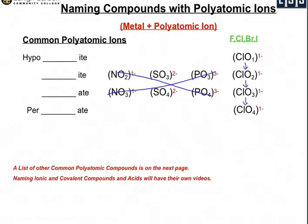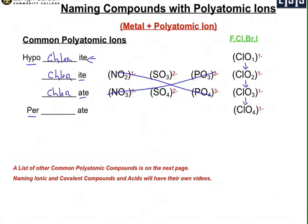For naming these halogen-oxygen ions, you still have the ITE and ATE forms, but because there are four, you also add a hypo prefix or a per prefix. With chlorine as the example: one oxygen is hypochlorite, two oxygens is chlorite, three oxygens is chlorate, and four oxygens is perchlorate. The same pattern applies to the other halogens, such as fluorate, bromate, or iodite.